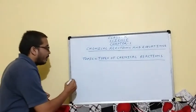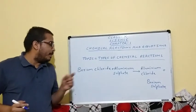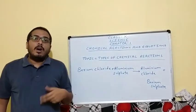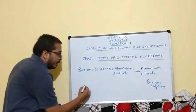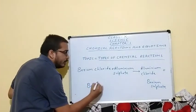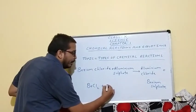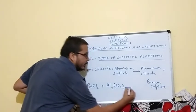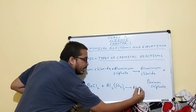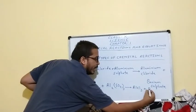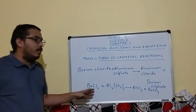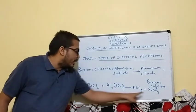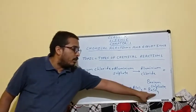Our question was: barium chloride reacts with aluminium sulphate to give aluminium chloride plus barium sulphate. The formula of barium chloride is BaCl2, plus aluminium sulphate Al2(SO4)3, giving aluminium chloride AlCl3 plus barium sulphate BaSO4. This is our skeletal equation and we will balance it using the hit and trial method.